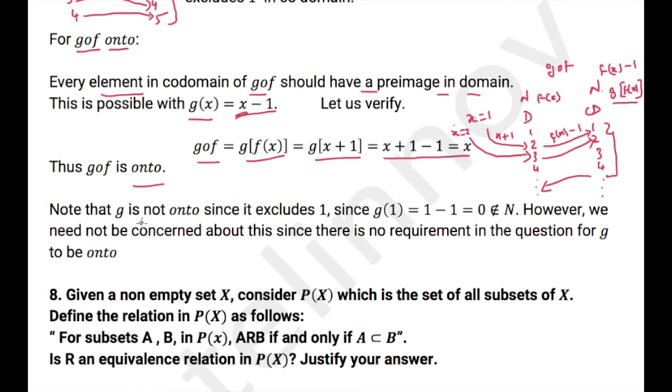Note that here g is also not onto. Since it excludes 1, g(1) = 1 - 1 = 0. However, let us not concern more about this because that is not the question being asked.